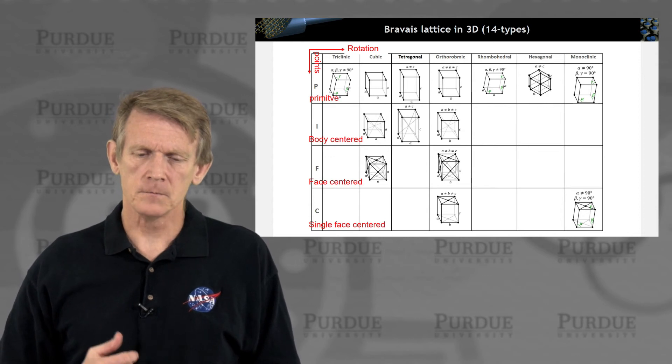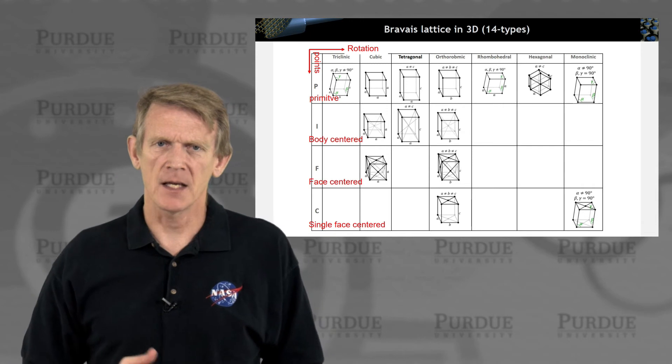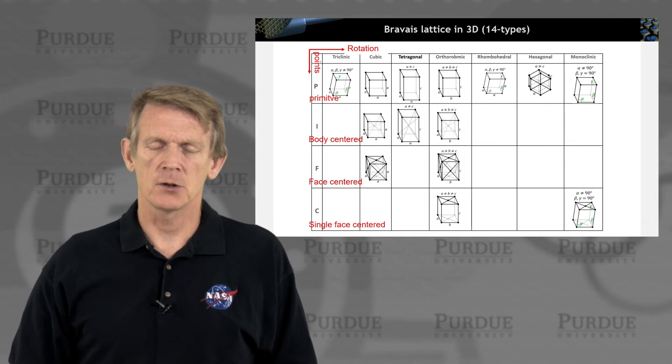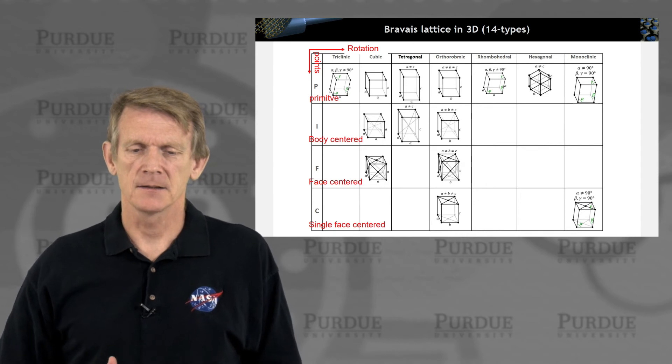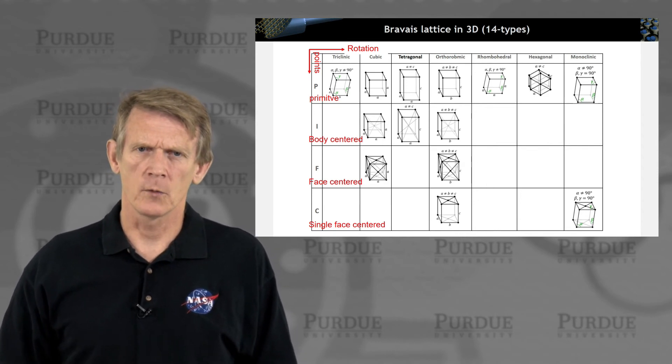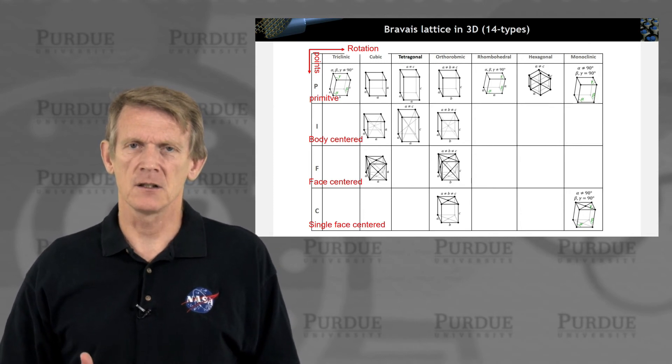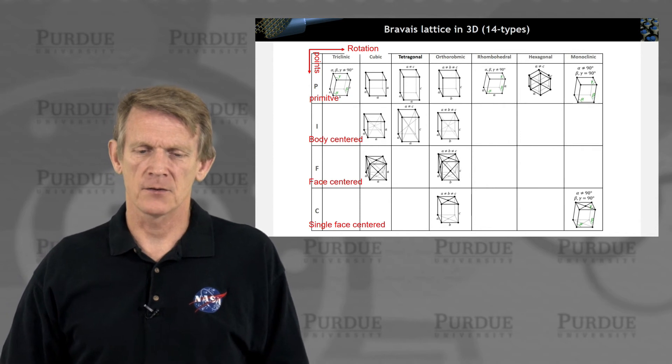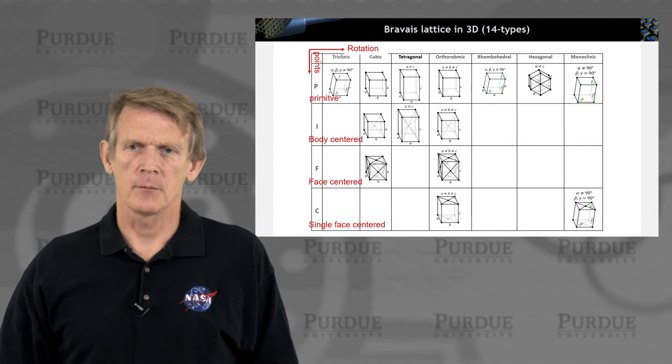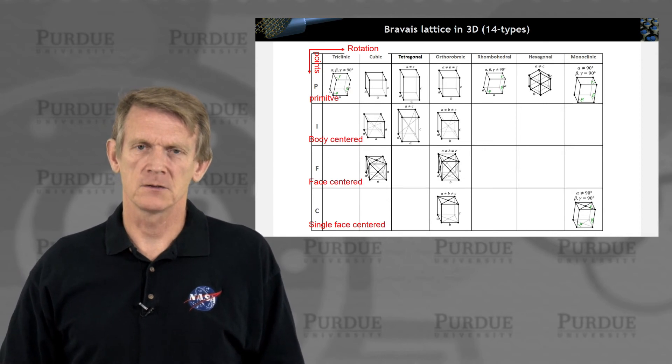You see some holes in this table. And that means you can construct these unit cells like that. But the point is you could have constructed them with another cell as well. These are the essential 14 Bravais lattices in 3D that can make up any three-dimensional repeated crystal space group.